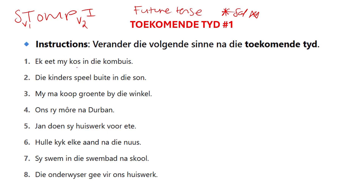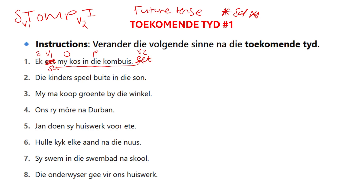When we read 'ek eet my kos in die kombuis', what do you see? You see your subject, you see your verb 1, 'my kos' — that's the object, 'in die kombuis' — that's the place. The others aren't needed. It's still a full sentence. Now, when we want to change this to toekoms tyd, our verb 1 is going to move to the end of the sentence and it will become verb 2, and our new verb 1 will become 'sal'. So your new sentence will be 'ek sal my kos in die kombuis eet'. I only changed my verbs. The rest of the sentence remains the same. It's as easy as that.